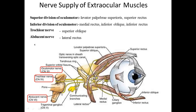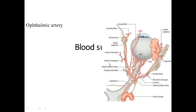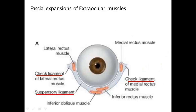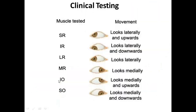You can see how the oculomotor nerve travels from the brainstem to supply the extraocular muscles. The ophthalmic artery is the main source of blood supply to the eyeball, along with the optic nerve. It crosses from the lateral to the medial side and divides into branches. The facial expansions include the check ligaments and suspensory ligaments — medial and lateral rectus check ligaments. Clinical testing: superior rectus — look laterally and upwards; inferior rectus — look laterally and downwards; lateral rectus — look laterally; medial rectus — look medially; inferior oblique — look medially and upwards; superior oblique — look medially and downwards.